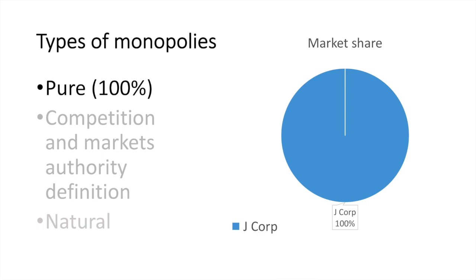A pure monopoly is typically the first type of monopoly students have in their mind when they first learn of this topic. A pure monopoly exists when a firm controls 100% of a market. Although rare in practice, they do exist. We'll focus our discussion on pure monopolies and firms that are considered by the government to be monopolies. In a later video we'll consider natural monopolies.